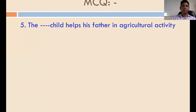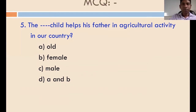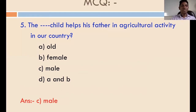MCQ number five: 'The [blank] child helps his father in agriculture activities.' In our country, the options include old child, female child, and male child. The answer is male child — in our country, the male child helps his father in agriculture activities. That is true.